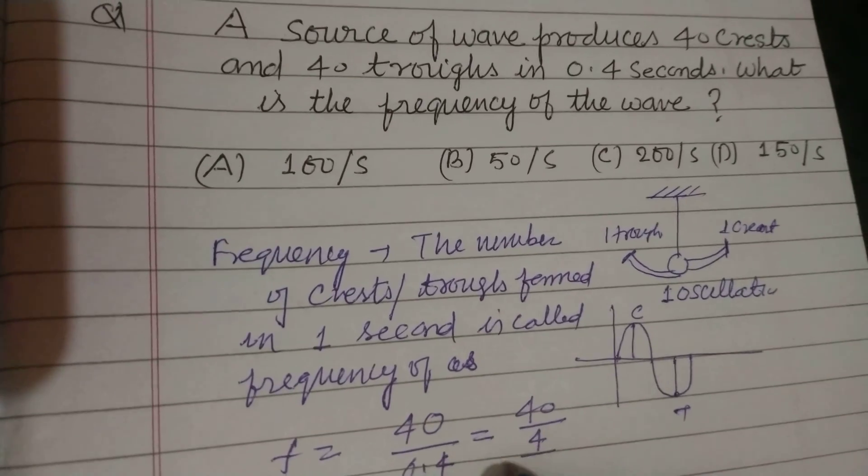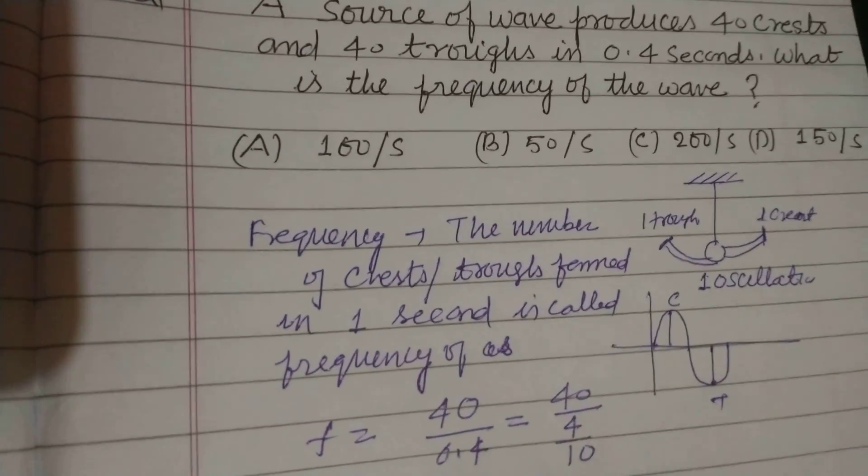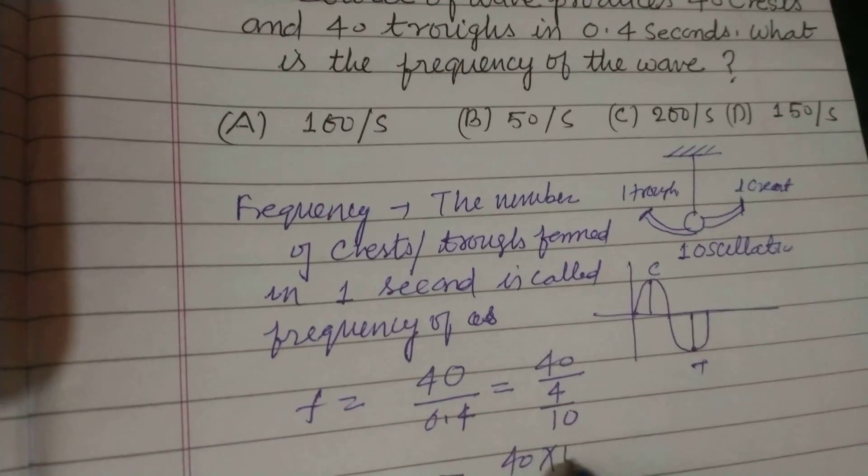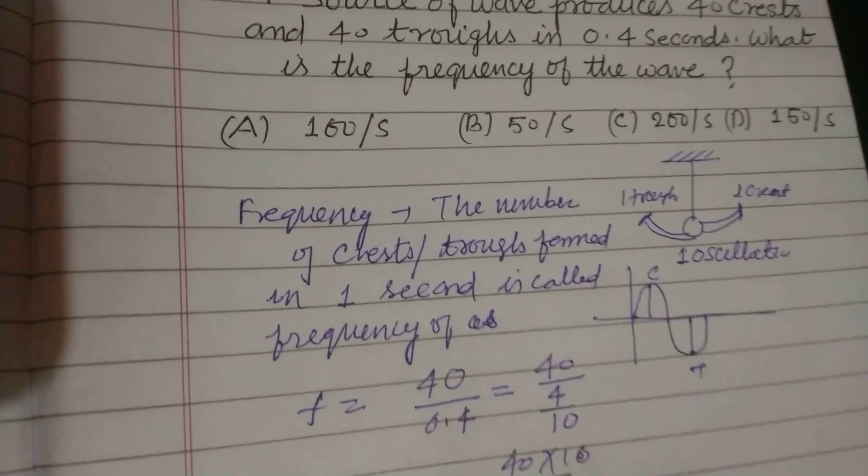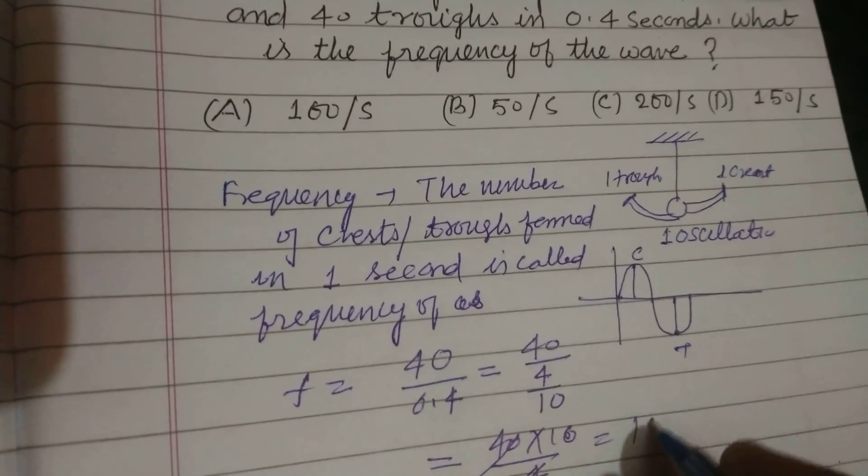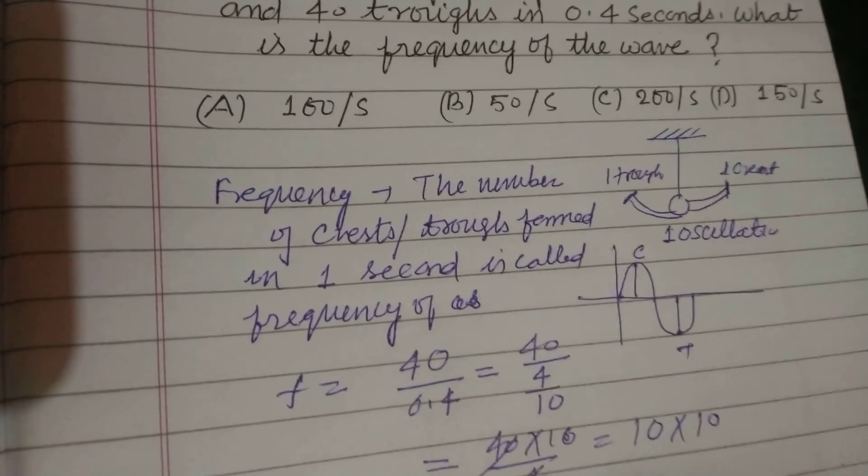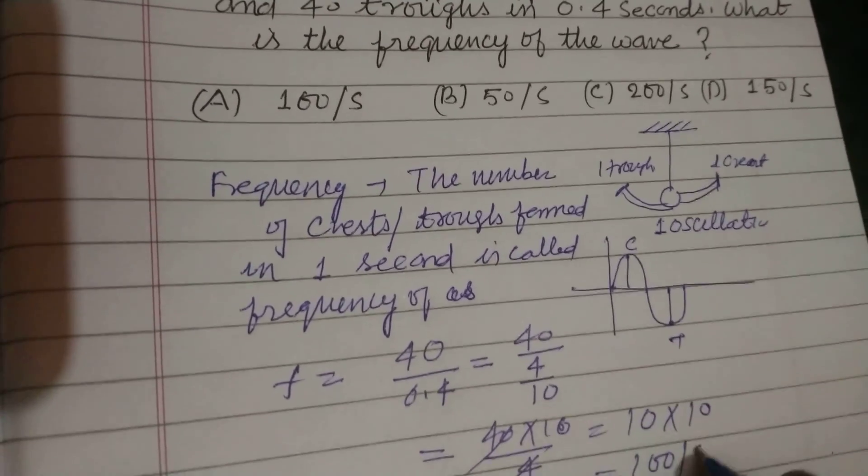We can write 0.4 as 4 upon 10. So this will be 40 into 10 upon, this is divided by 10 times 10 into 10, equals 100 per second.